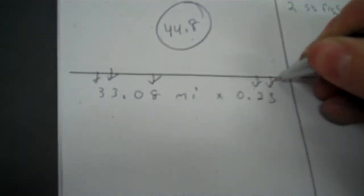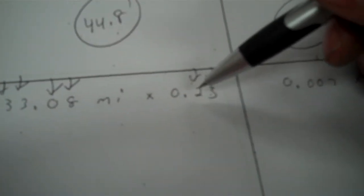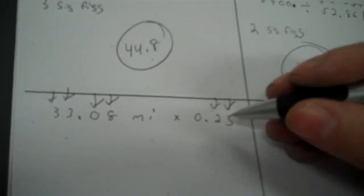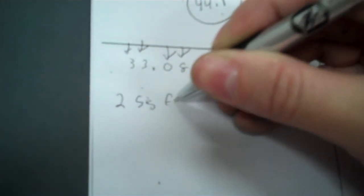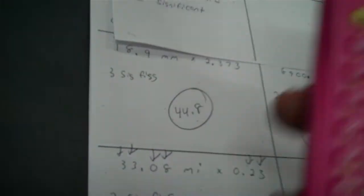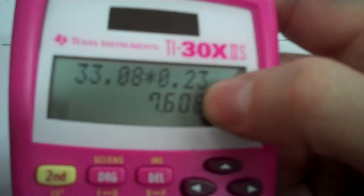Okay, next one. Non-zero digits, just mark them down. Zeros between non-zero digits — that zero is a betweener, that one's not. Zeros after a decimal are significant — that's not after the decimal. That is a final zero before a decimal, so it's not significant. So we're going to go two sig figs here. So 33.08 times 0.23 — two sig figs — you'd have 7.6. I think that would stay a six, so 7.6.